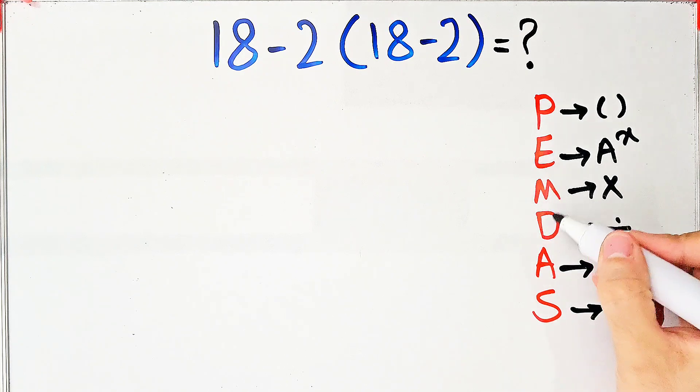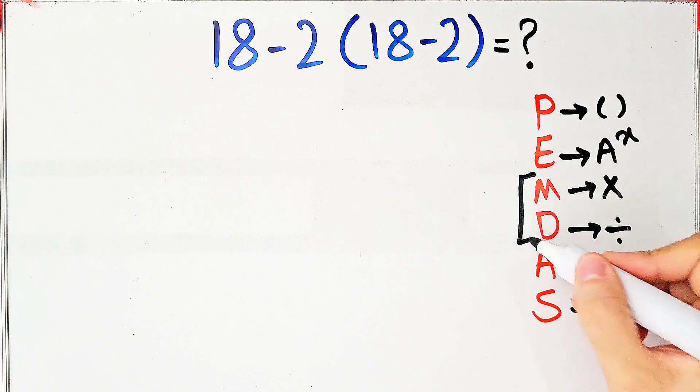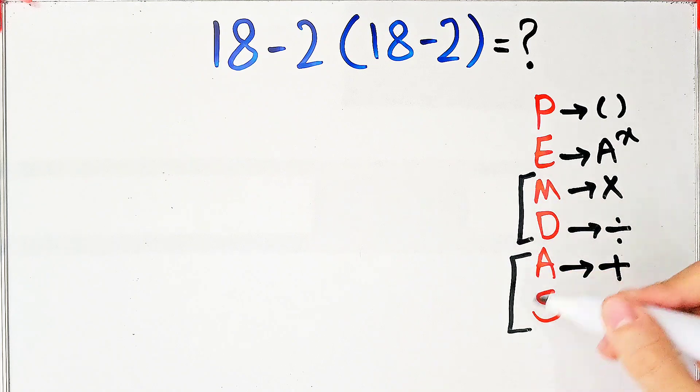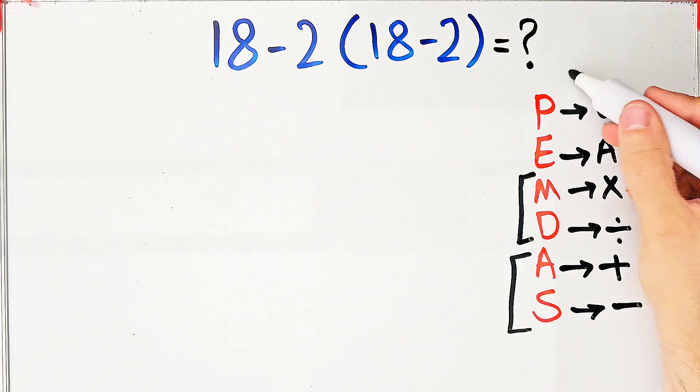Multiplication and division have the same level of priority. Also, addition and subtraction have the same level of priority. When we have both in an expression, we start from the left and simplify.